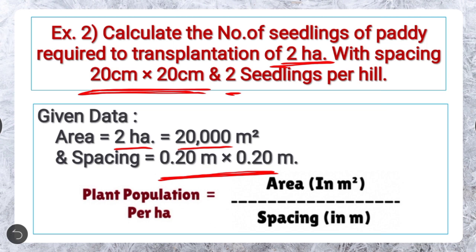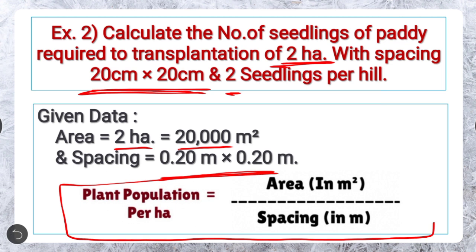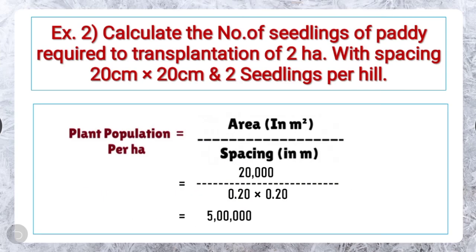We have been asked to calculate the number of seedlings required for 2 hectares, which means we have to calculate the plant population for a total of 2 hectares. Using the formula — plant population equals area in meter square divided by spacing in meter — putting the given values: plant population for 2 hectares equals 20,000 divided by 0.20 × 0.20, and the answer will be 5 lakhs.